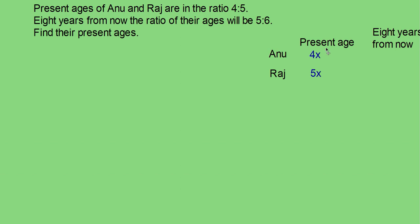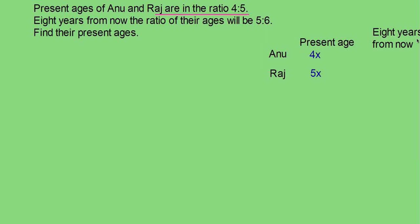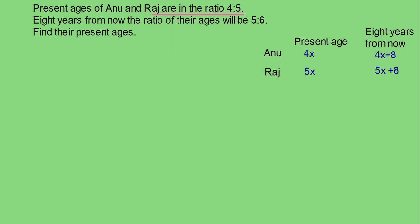The present age of Anu you can take as 4x, and Raj as 5x, since their ratio is given as 4:5. Now, 8 years from now means after 8 years. Anu's present age is 4x, so after 8 years it will be 4x + 8. Raj's age after 8 years will be 5x + 8. According to the condition, the ratio of their ages after 8 years is 5:6, so (4x + 8) / (5x + 8) = 5/6.